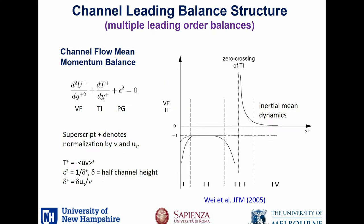If we do that, we get the following equation — a mean momentum balance or mean force balance for turbulent channel flow. I've inner-normalized it, so I'm using nu and u_tau, the friction velocity determined from the pressure gradient in these fully developed flows to normalize. The superscript plus refers to that. Epsilon squared is a small parameter equal to one over the Reynolds number, where the Reynolds number is based on the channel half height. This epsilon squared comes about by doing an integral momentum balance for the channel flow.